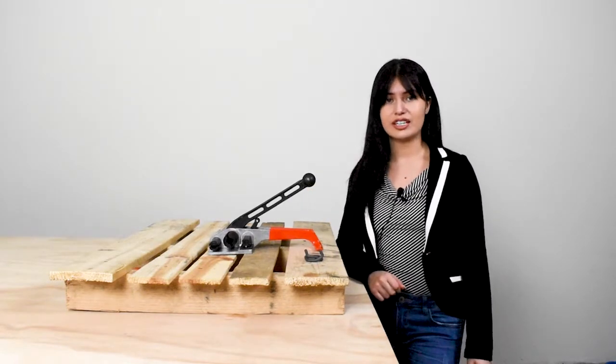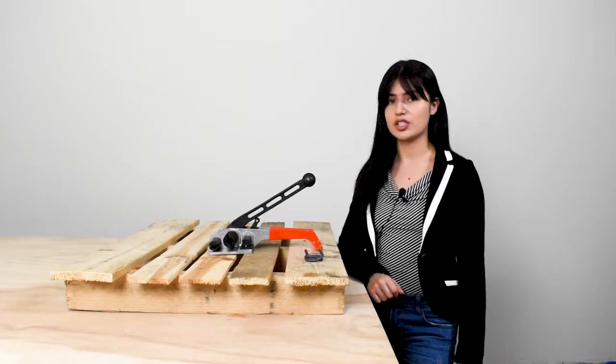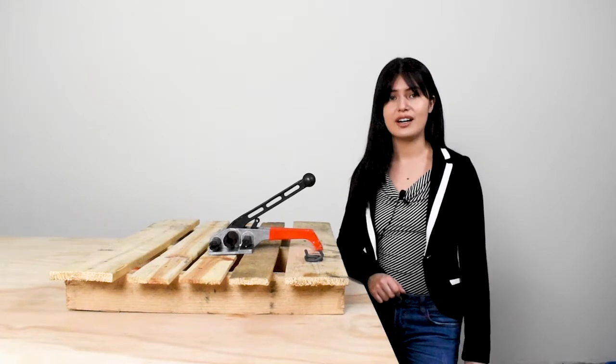This heavy duty tensioner can tension woven polyester, also known as cord strap, from 5/8 to 1.5 inches in width.